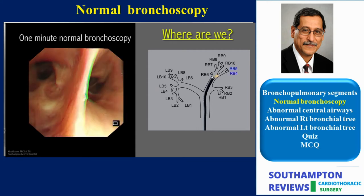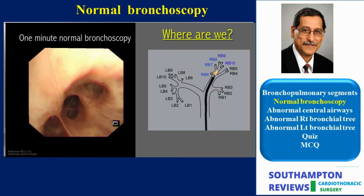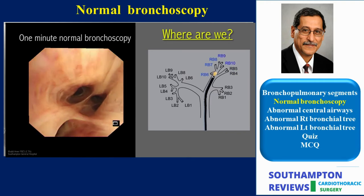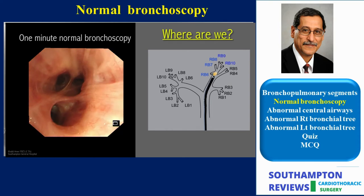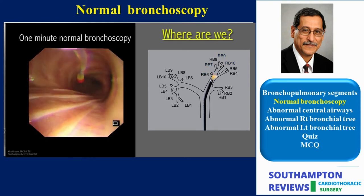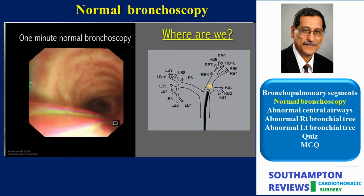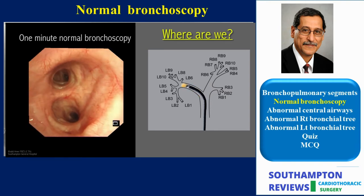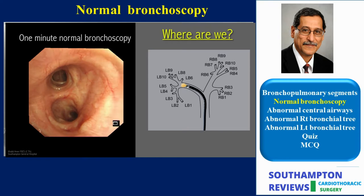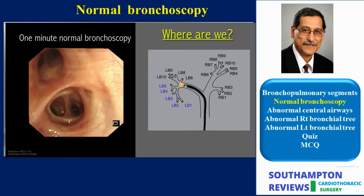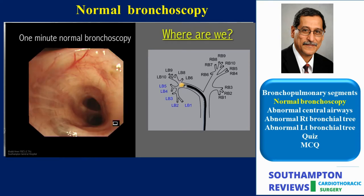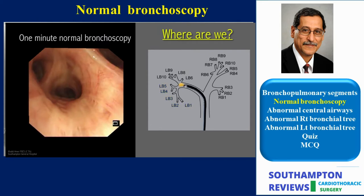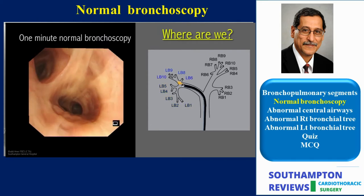As a quick reminder, the general arrangement is a single main stem trachea dividing into two lobar bronchi, representing the first level of division. The main lobar bronchi divide into segmental bronchi, representing the second level of division. Up to the level of the segmental bronchi the anatomy doesn't change much, but when it comes to the subsegmental and the third level of division, the anatomy isn't so constant.